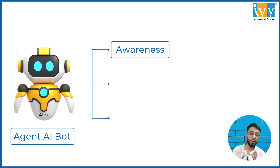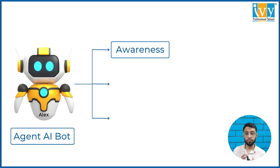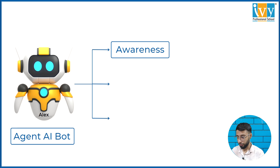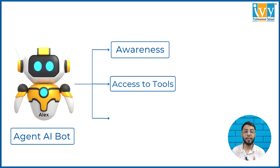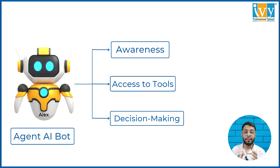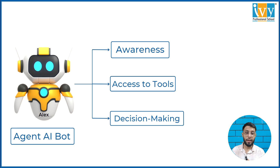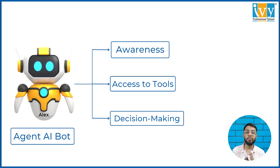Agent AI, on the other hand, is more aware — it knows what the user is asking and can suggest additional relevant information. It has access to a lot of external tools to enhance its output. Most importantly, agent AI can make its own decisions to solve business objectives and complete tasks without requiring constant human direction.